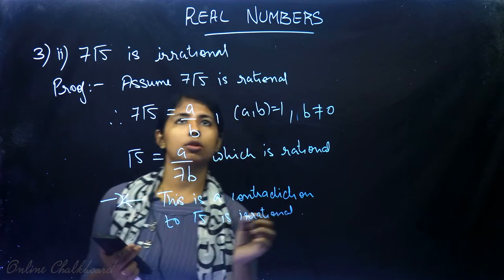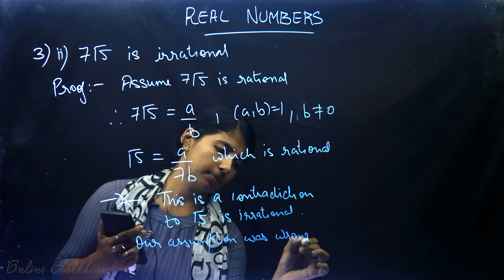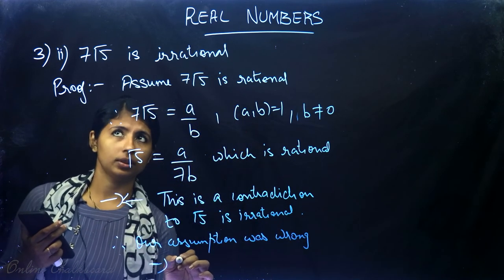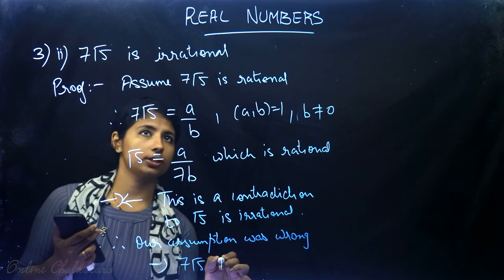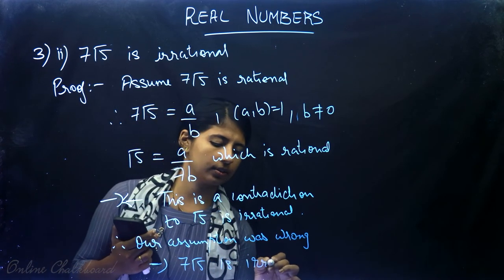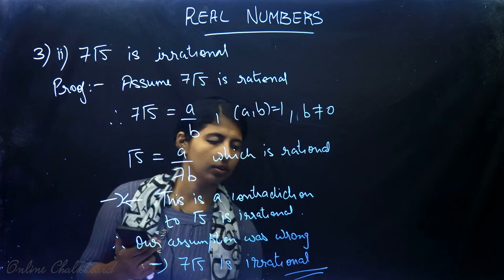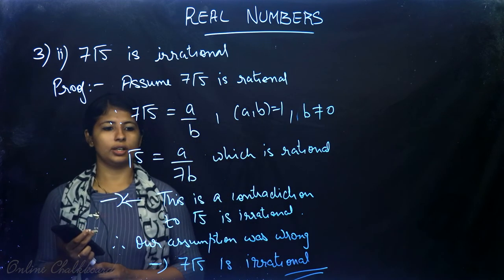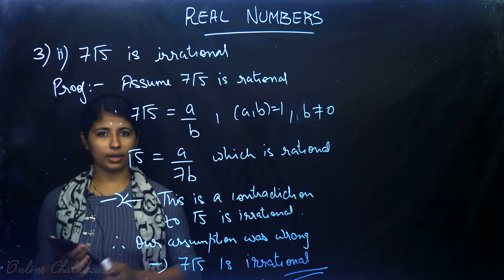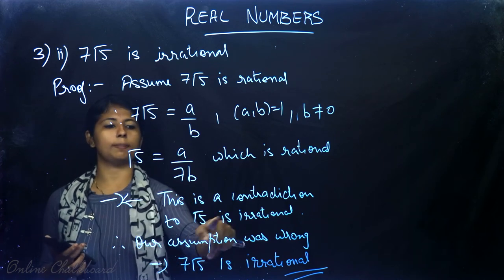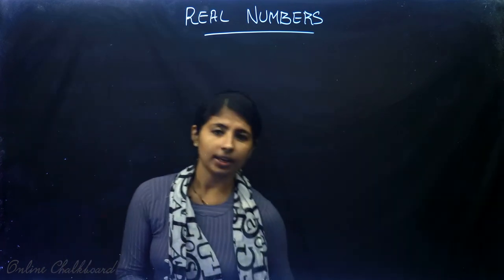Therefore our assumption is wrong. This implies 7√5 — the product of a rational and an irrational number — is irrational. If this question comes for higher marks, you will have to prove separately that √5 is irrational.